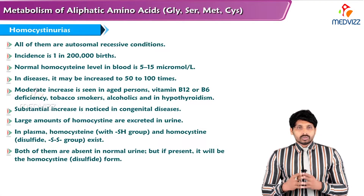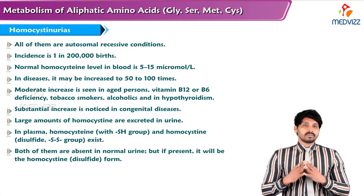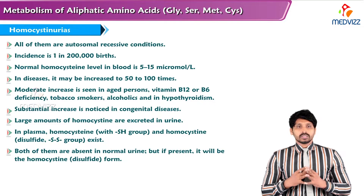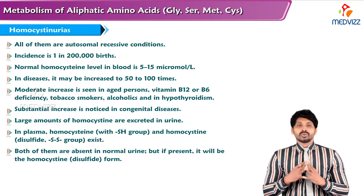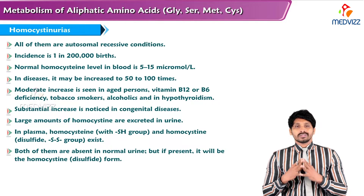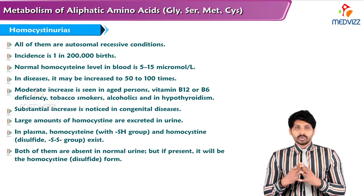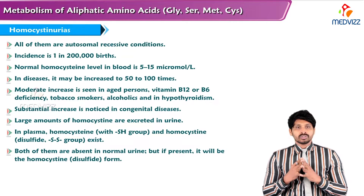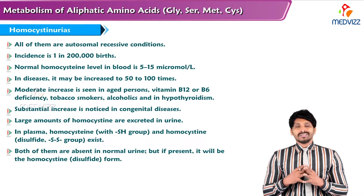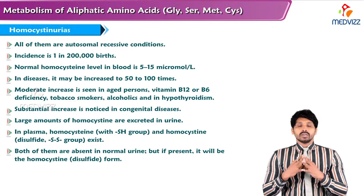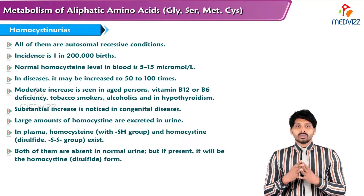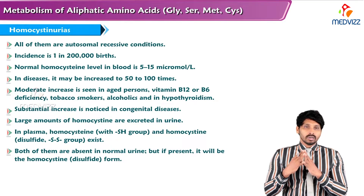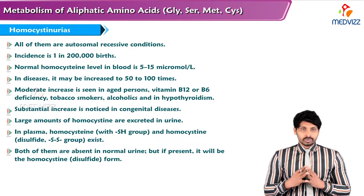Hello everyone, myself Dr. Suresh, Professor of Biochemistry. In this video we will discuss about homocystinuria, that means metabolic disorders related to methionine. There are different types of homocystinuria, meaning accumulation of homocysteine levels in the body, in the blood as well as in the urine, leading to the condition homocystinuria. We'll discuss in detail about this.